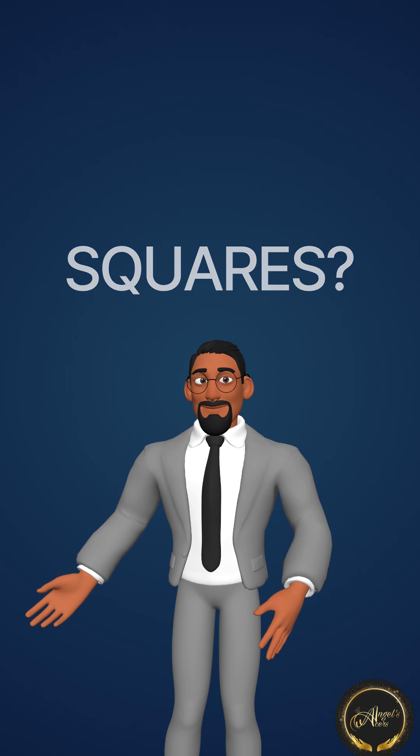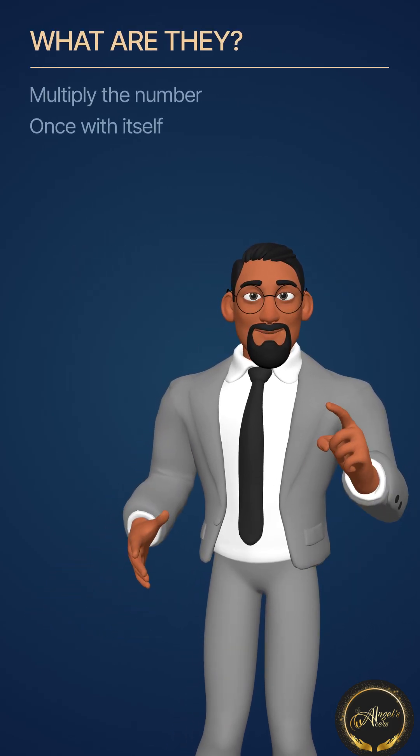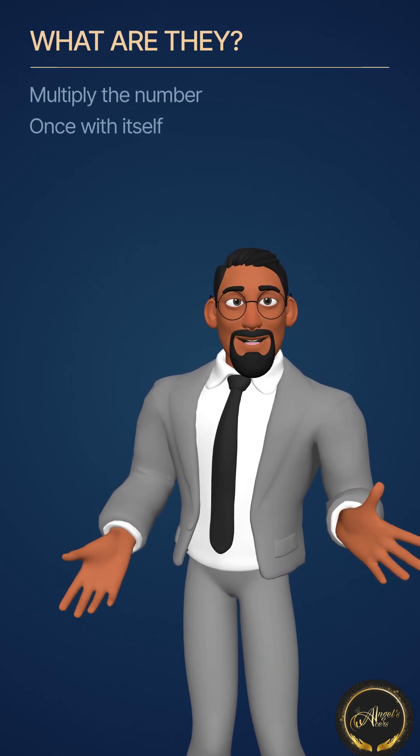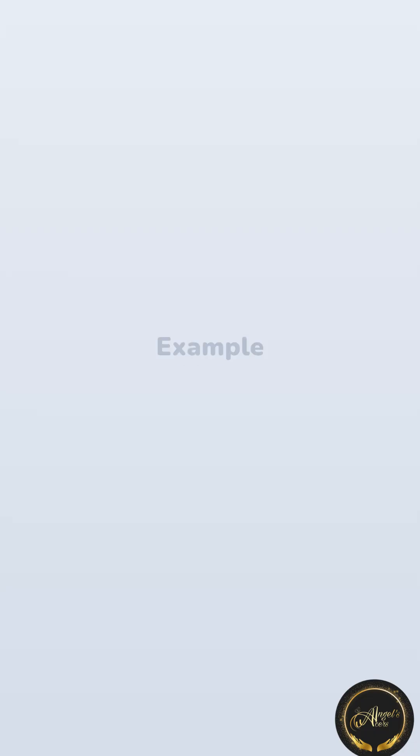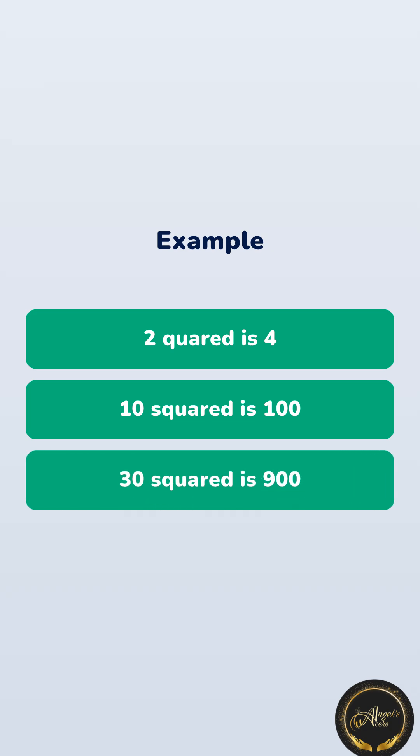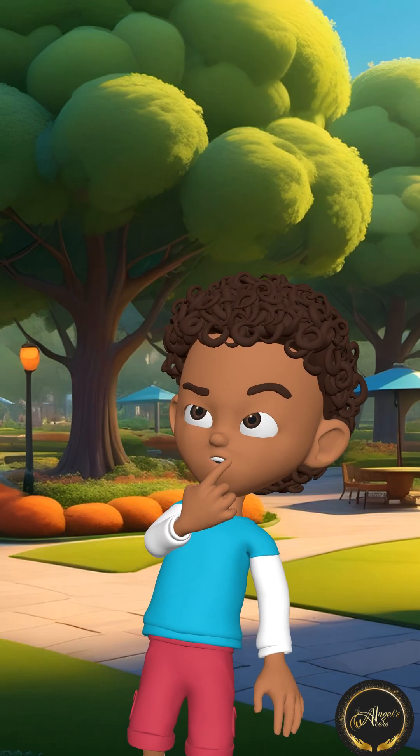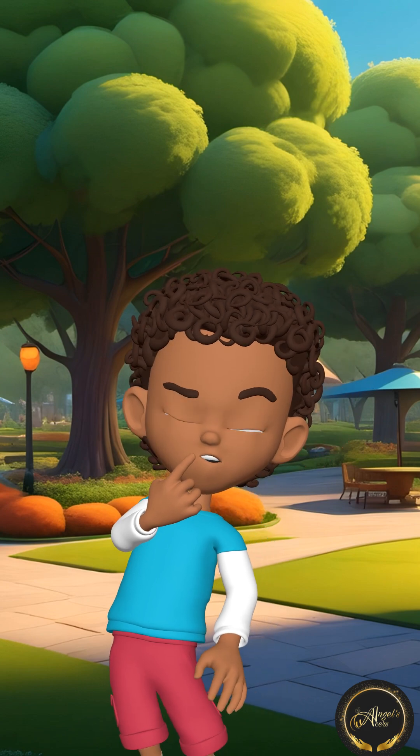We will learn about squares today. Squares are when we multiply the same number by itself once. Let's look at some examples: 2 squared is 4, 10 squared is 100, 30 squared is 900.